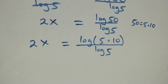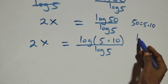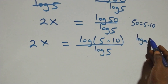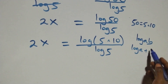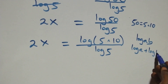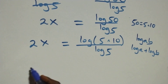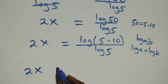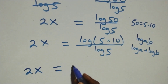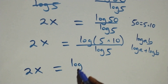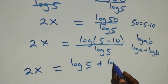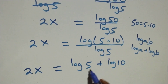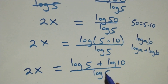This follows from the product rule of logarithm: log(a times b) is the same thing as log a plus log b. So we have 2x equals log 5 plus log 10, all over log 5.